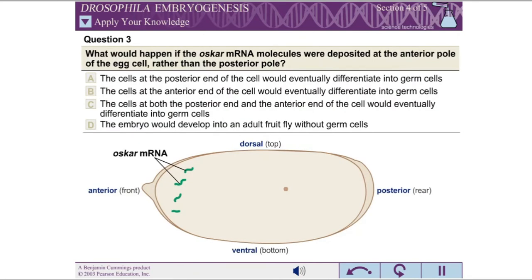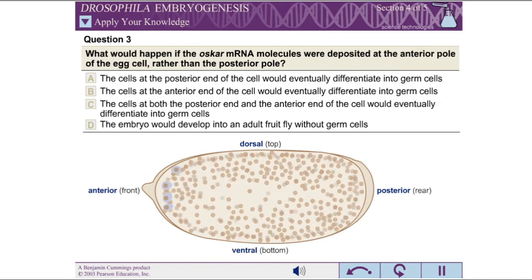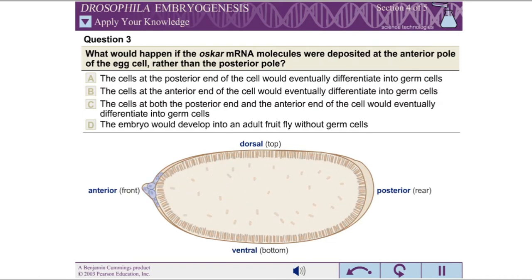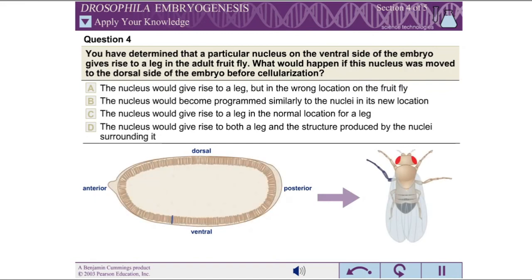Question 3: What would happen if the oskar mRNA molecules were deposited at the anterior pole of the egg cell rather than the posterior pole? Question 4: You have determined that a particular nucleus on the ventral side of the embryo gives rise to a leg in the adult fruit fly. What would happen if this nucleus was moved to the dorsal side of the embryo before cellularization?